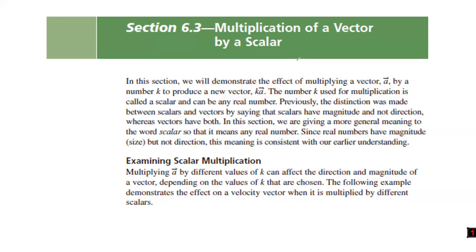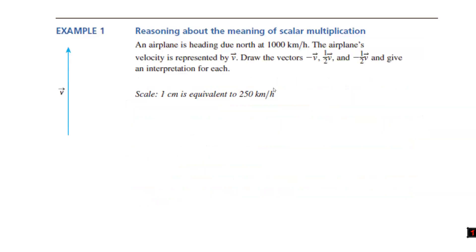For example, multiplying by a positive or negative scalar affects the direction of a vector in different ways. Example one: an airplane is heading due north at 1000 km/h. The airplane's velocity is represented by V. Draw the vectors minus V, one-half V, and minus one-half V, and give an interpretation for each.